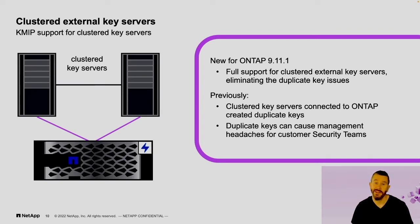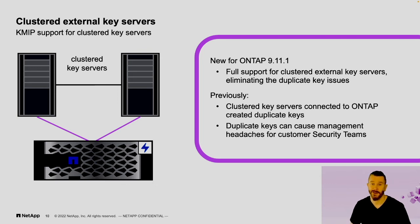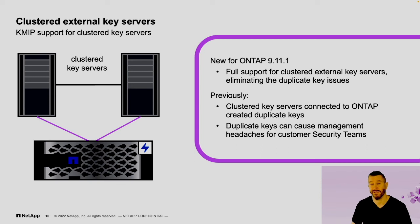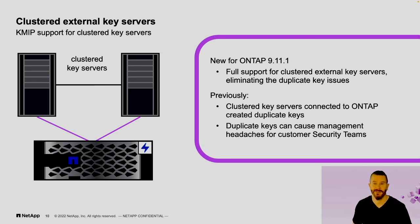Another capability added in ONTAP 9.11 is support for external clustered key servers. ONTAP supported an on-box key server for at-rest data encryption a number of years ago, and then for several versions we supported external key servers, allowing customers to manage their own keys using an external key management service. However, if you were clustering those external key servers for high availability purposes, that could sometimes cause administrative problems on ONTAP. With this newest release, we fully support clustered external key servers, making that much, much easier to do.